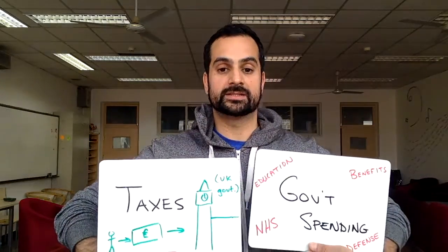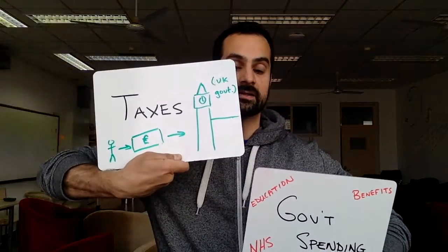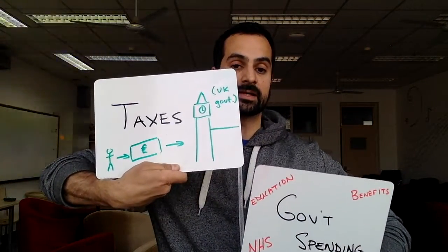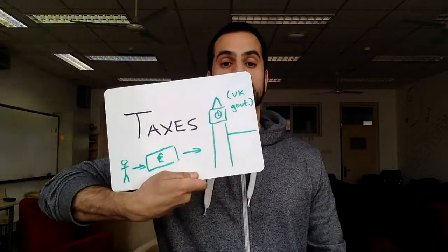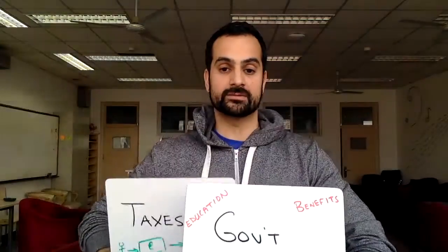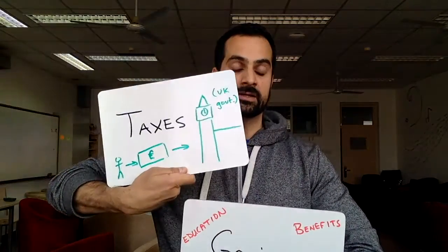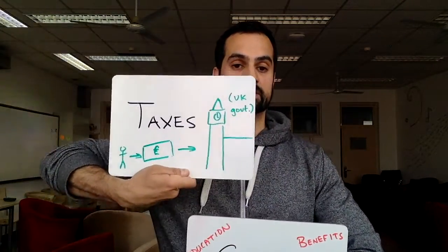The second part is taking a look at when taxes are greater than government spending. When taxes are greater than government spending, you have a situation called a budget surplus.